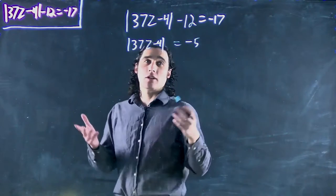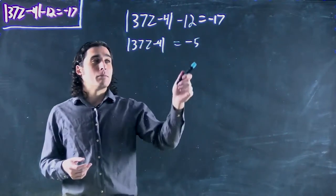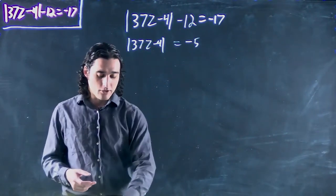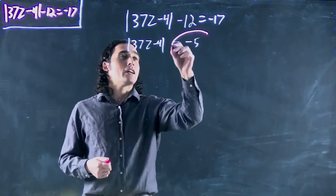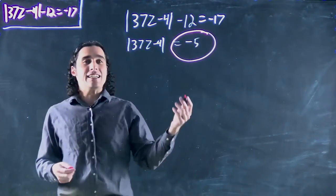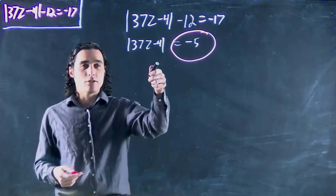And now we might be tempted to do our usual plus or minus but we have an issue. A big issue in fact. What do we have on the opposite side? We have it equal to minus 5. An absolute value cannot equal a minus.